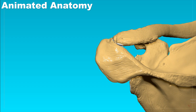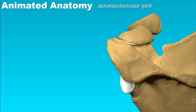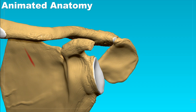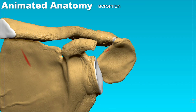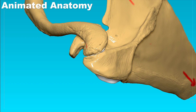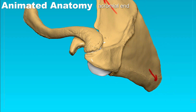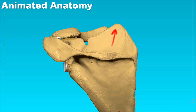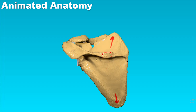What we see here is the acromioclavicular joint, which is made up by the acromion of the scapula and the acromial end of the clavicle — not always easy to recognize. We can also find here the deltoid tubercle for the deltoid muscle, which is not always that prominent.